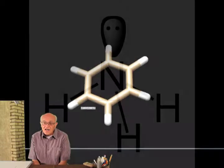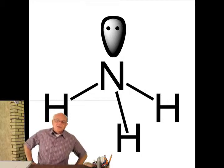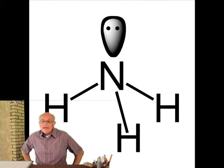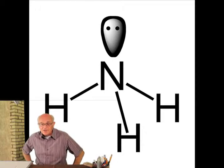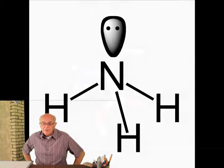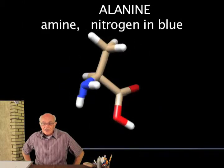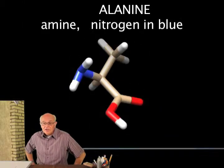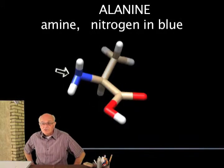Nitrogen has five valence electrons. Nitrogen typically forms bonds with three other things, and then the two remaining electrons make a cloud — a cloud that is actually much bigger than the bonds — and the cloud pushes compounds with nitrogen into pyramidal shapes. Looking at alanine, this amino group shows that the nitrogen forms a pyramidal structure.